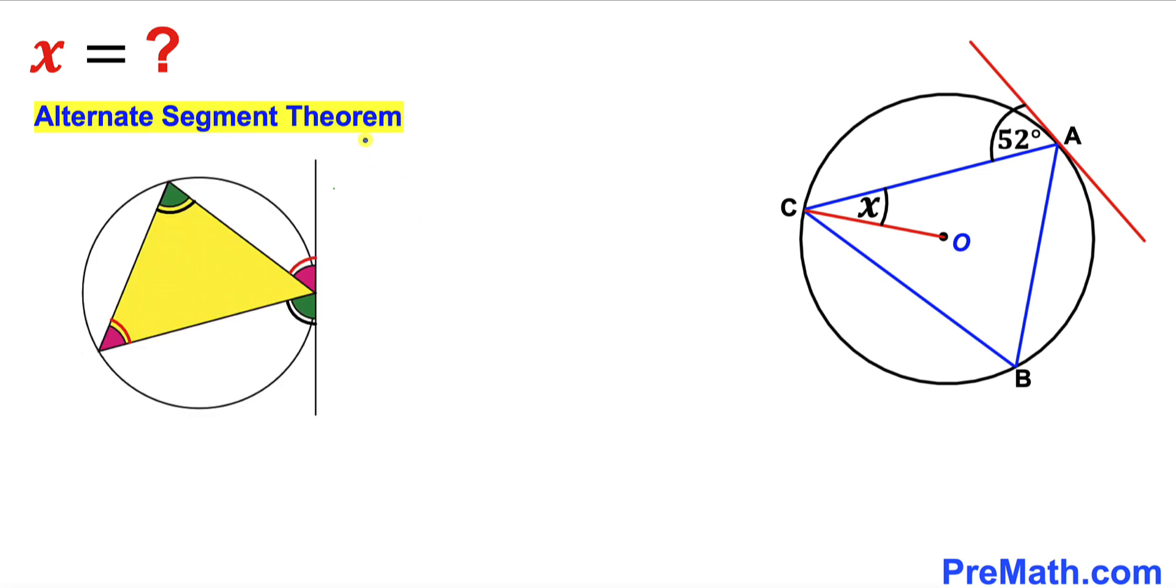Let's recall the Alternate Segment Theorem. According to this theorem, this angle with the tangent line and the chord is congruent to this angle over here. Therefore, in our case, this angle of 52 degrees is going to be congruent to angle ABC. If this one is 52 degrees, this angle has got to be 52 degrees as well.